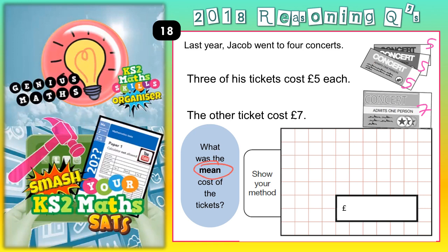Now remember, the word mean is another word for average — it's a type of average. There are other averages that you will learn about later, but this one is just the mean. To find the mean average, you basically need to add everything up and then divide by how many.